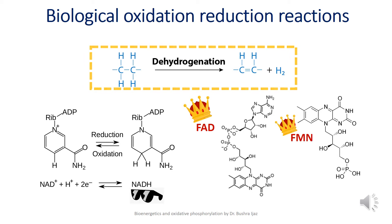Many biological oxidation-reduction reactions are dehydrogenation reactions, in which one or two hydrogen atoms are transferred from a substrate to a hydrogen acceptor. These oxidation-reduction reactions in living cells involve specialized electron carriers. The most important biological molecules here are NAD, FAD, and FMN. FAD, or flavin adenine dinucleotide, is a redox co-factor created during the Krebs cycle and utilized during the electron transport chain. NAD, or nicotinamide adenine dinucleotide, is a similar compound used more actively in the electron transport chain.